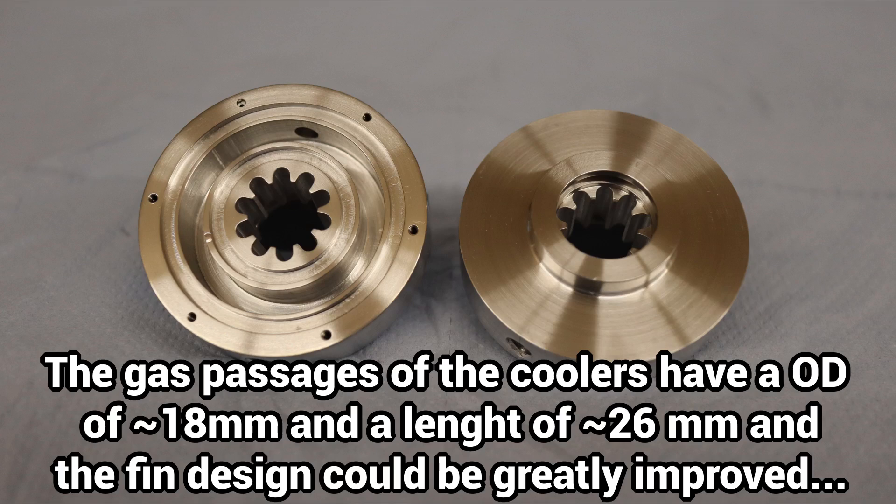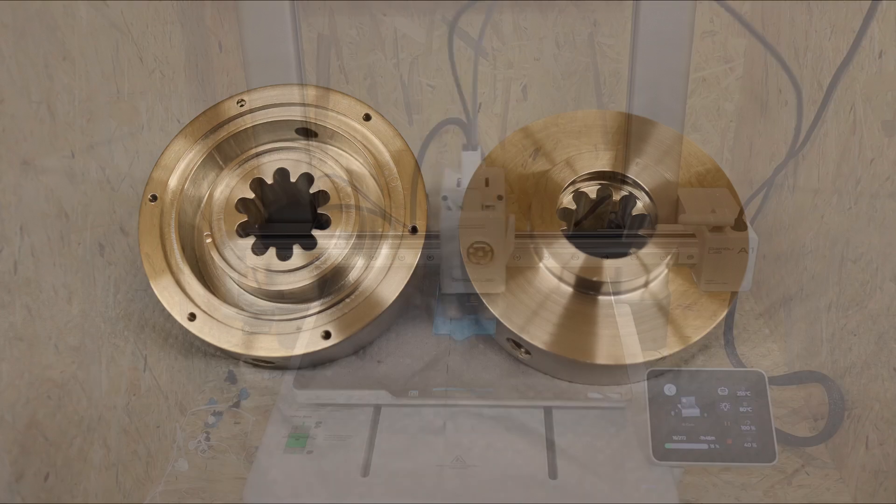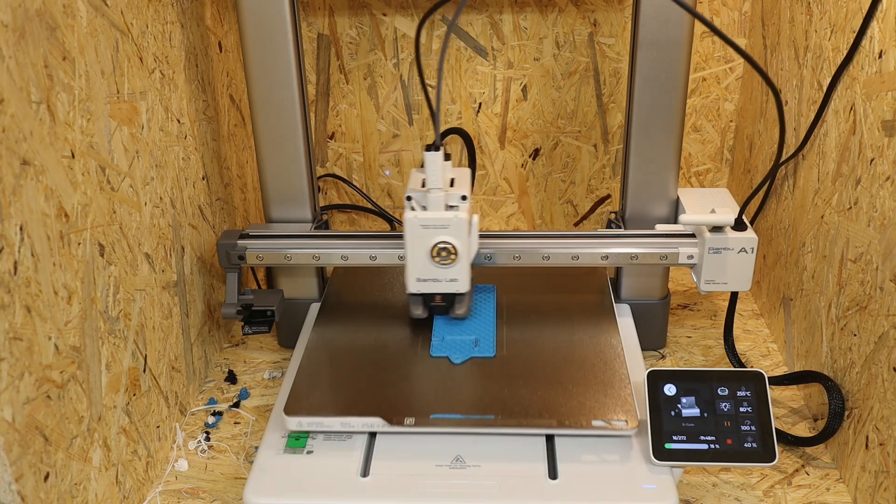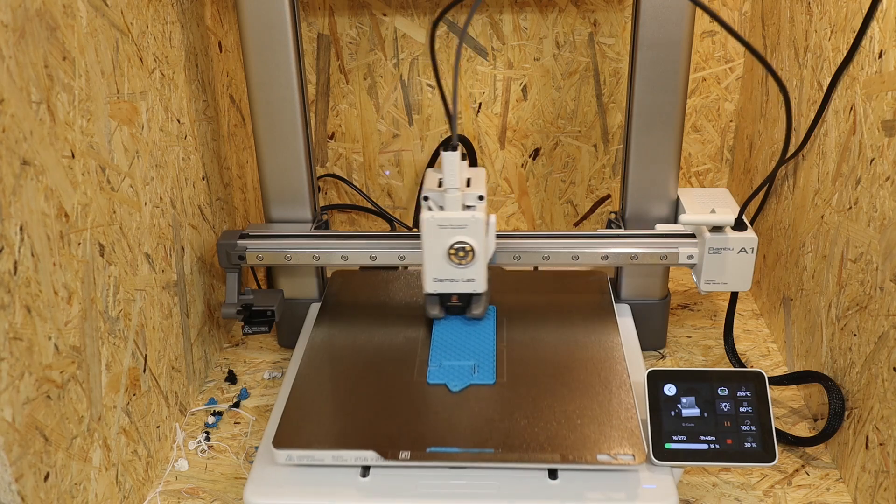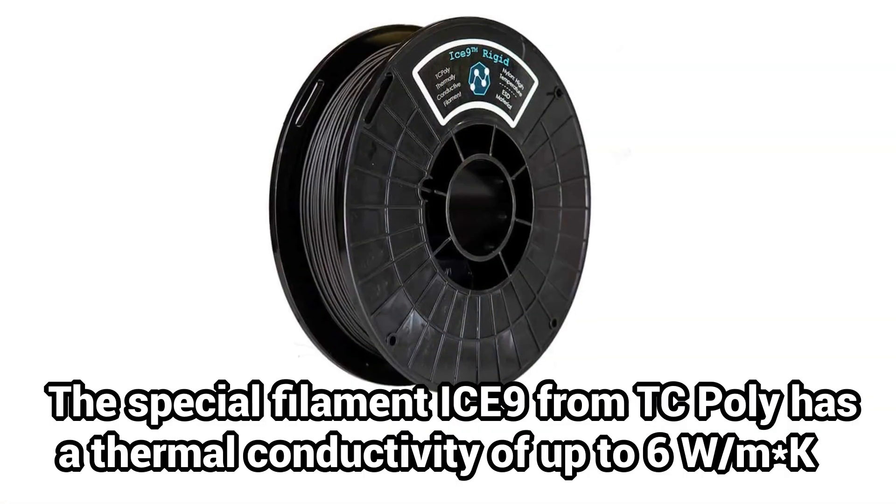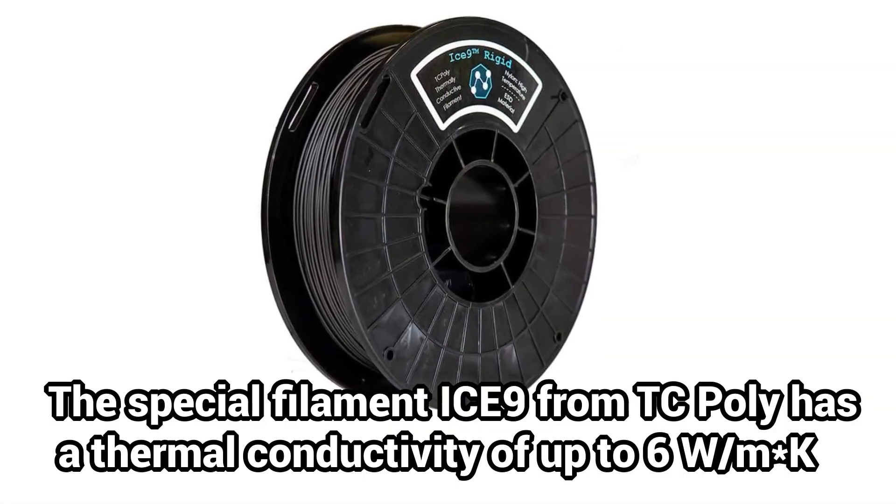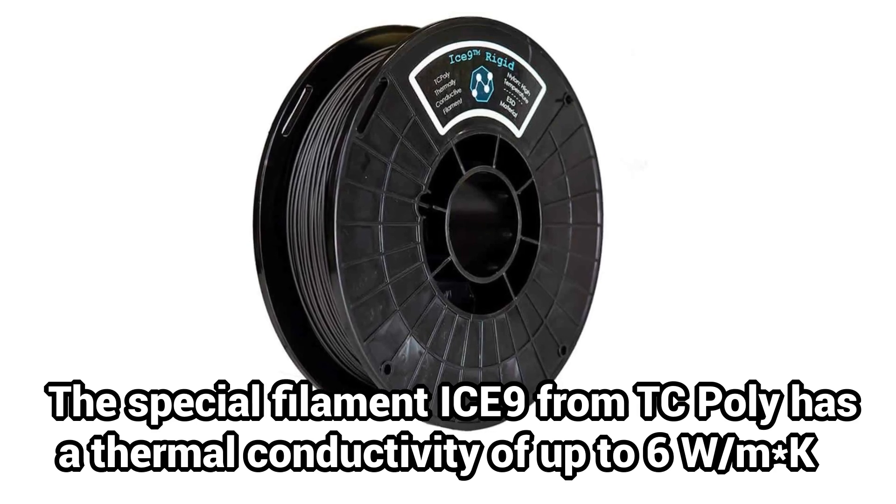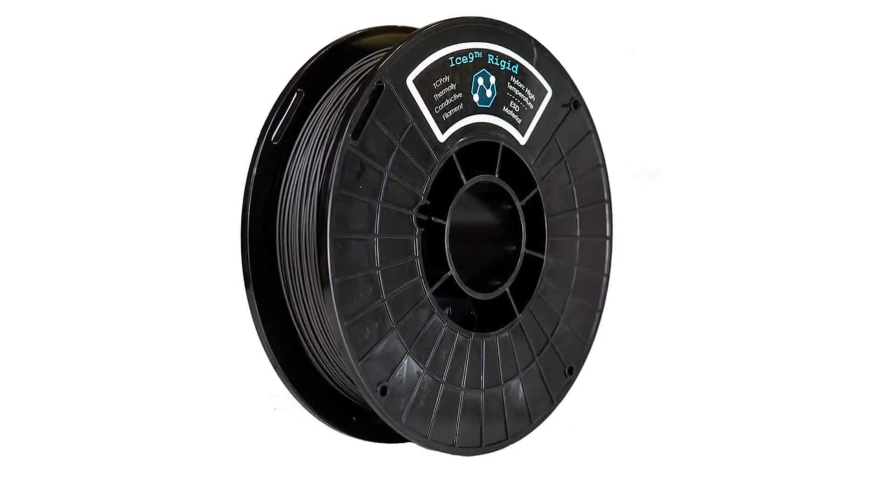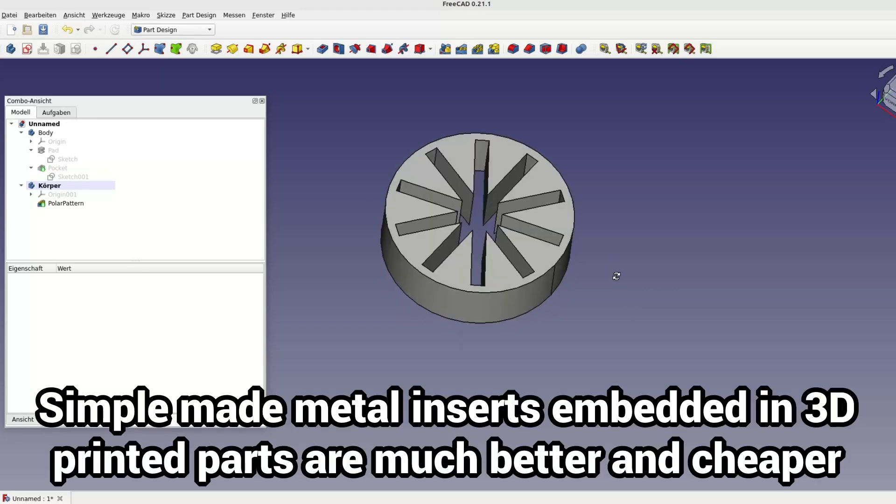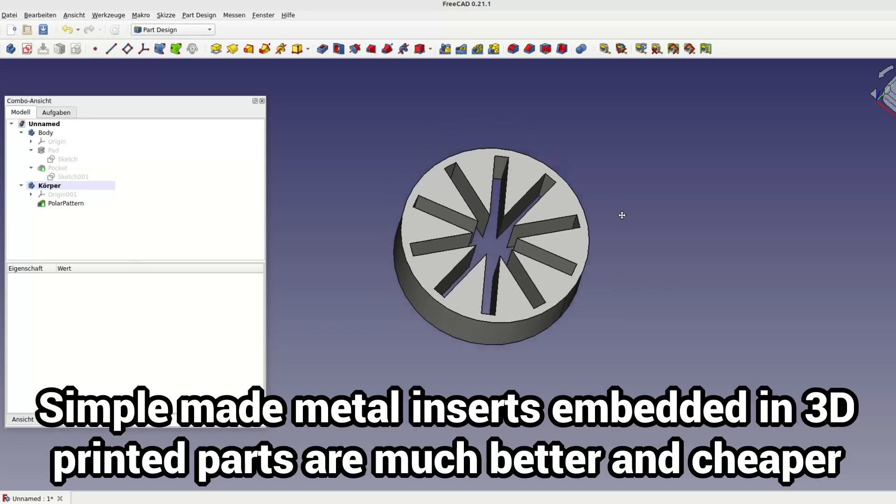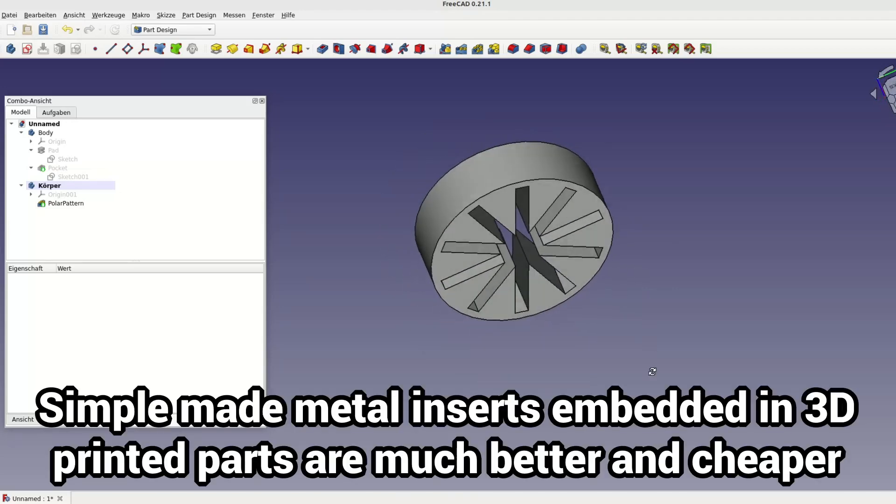The coolers could also be made from thermally conductive filament using a 3D printer. The special I3 filament from TC Poly is available with different base polymers and has high thermal conductivity and heat resistance for plastics, but is quite expensive. The clever use of metal inserts would be cheaper and probably better.